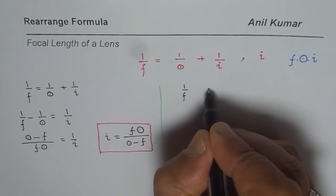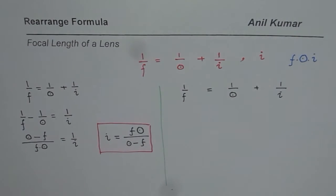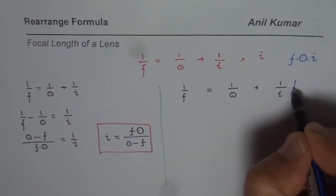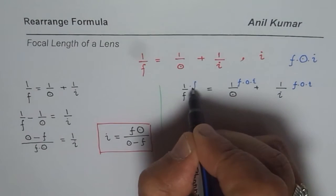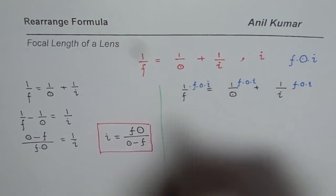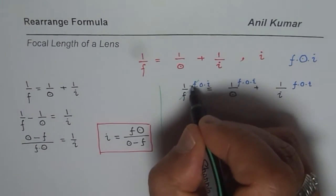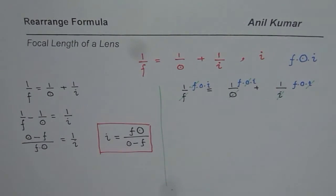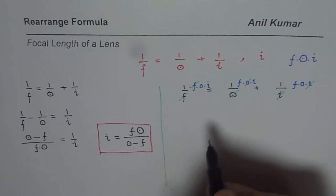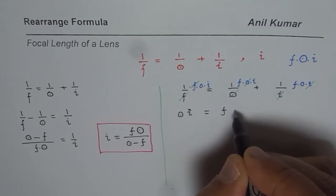Rewriting the equation: 1 over f equals 1 over O plus 1 over I, and multiplying each term by F·O·I. The F cancels in the first term giving O·I; object distance cancels in the second giving F·I; image distance cancels in the third giving F·O. So we get a linear equation without fractions: O·I equals F·I plus F·O.